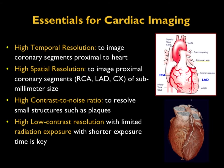High temporal resolution means very fast acquisition, which in CT translates to faster gantry rotation time. The second essential component needed for cardiac imaging is high spatial resolution. High spatial resolution is needed to image proximal coronary segments such as the RCA, LAD, and CX, which are of sub-millimeter size and run in all directions around the heart.